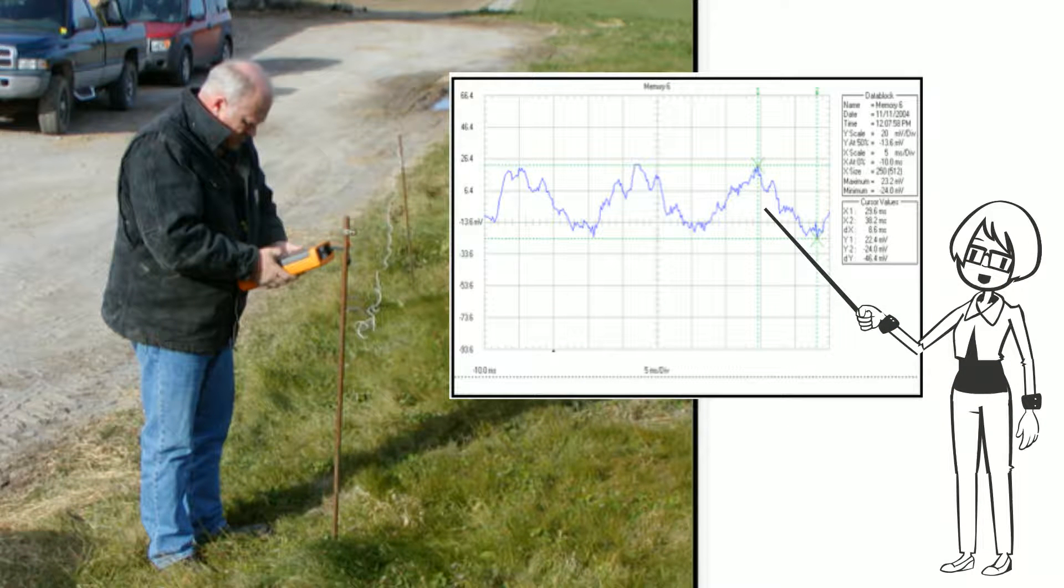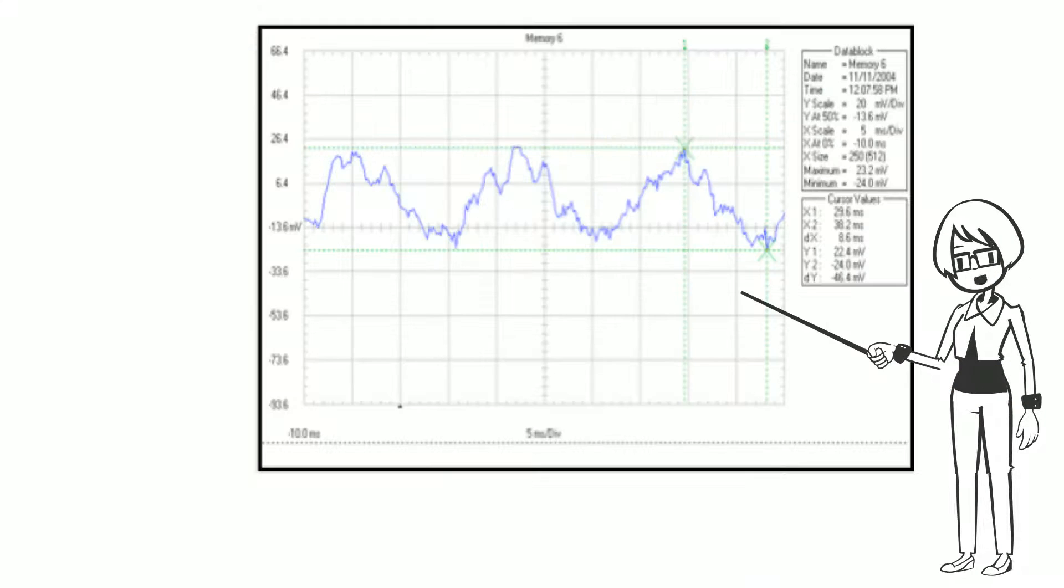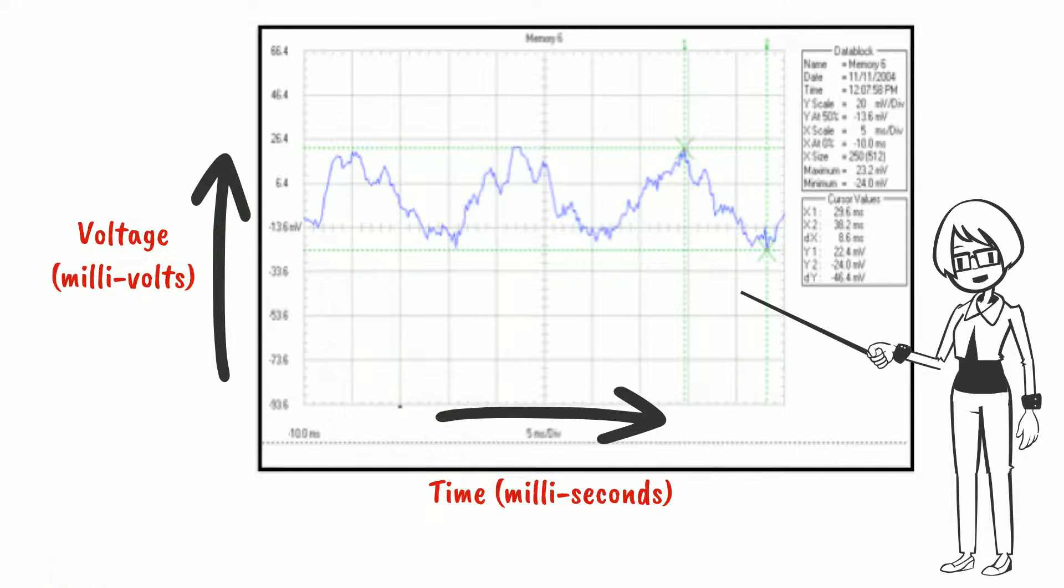And this is what the electricity looks like. Along the x-axis we have time measured in milliseconds. Along the y-axis we have the voltage difference between the two ground rods.